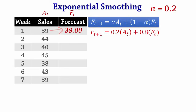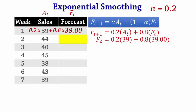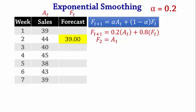We calculate F2 as 0.2 × 39 + 0.8 × 39, which always gives 39. As a result, we simply assume F2 = A1 and don't bother calculating it. If F1 is not given, we start by copying the value in A1 into F2.